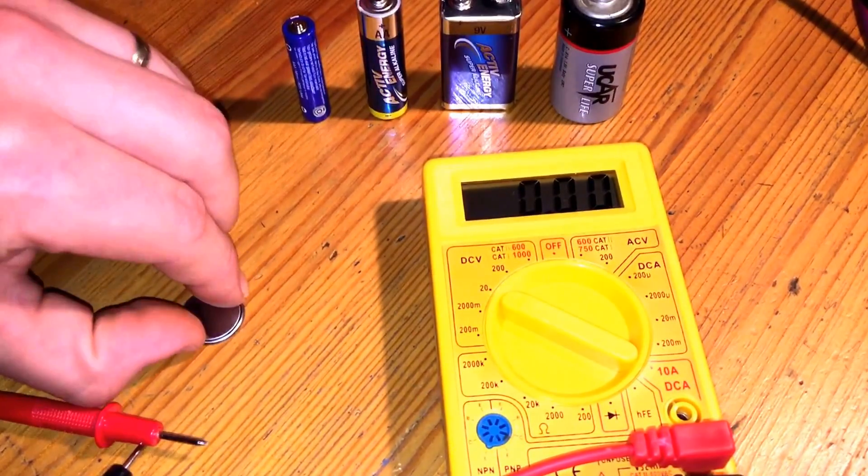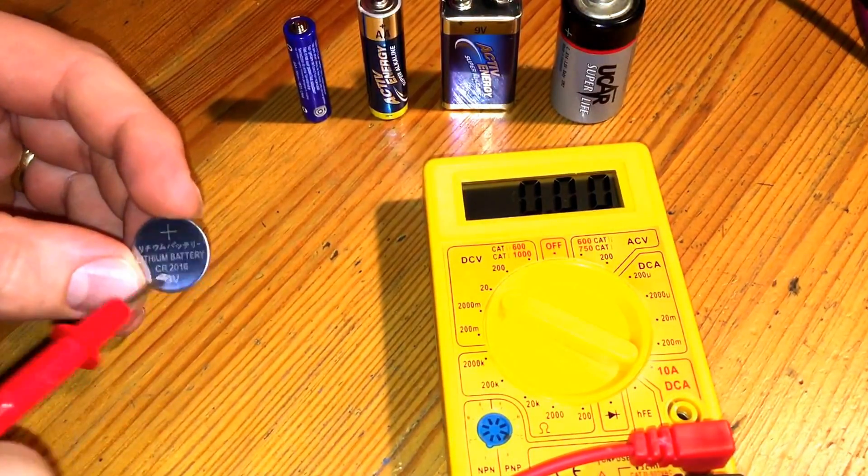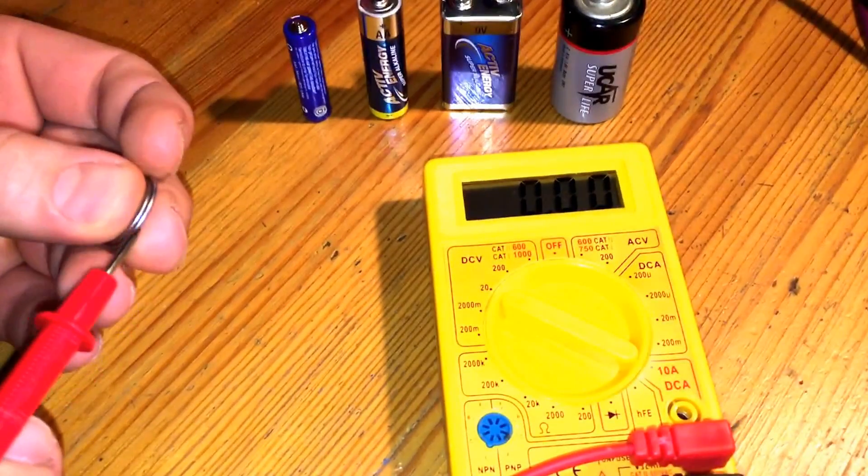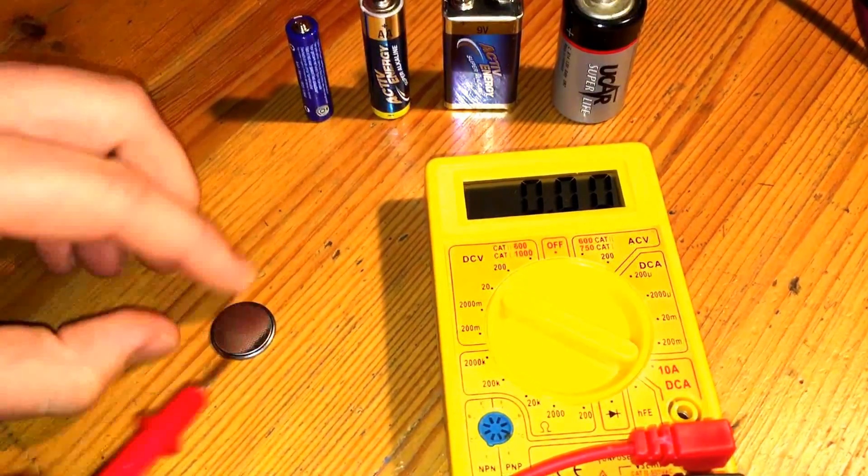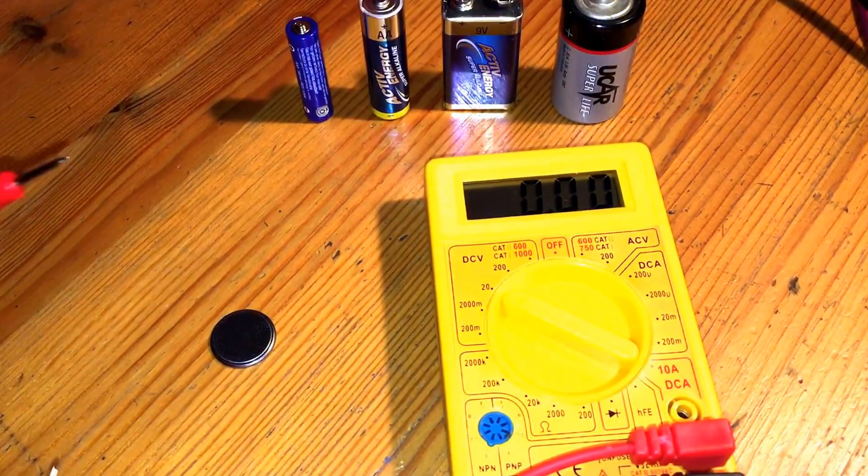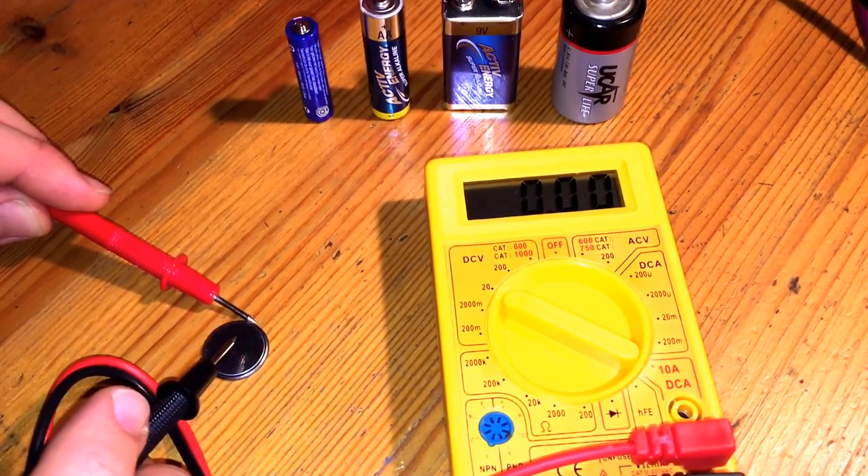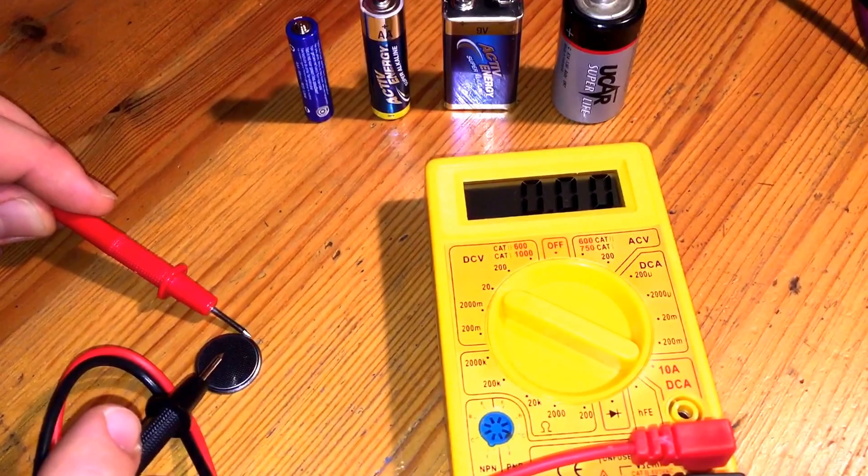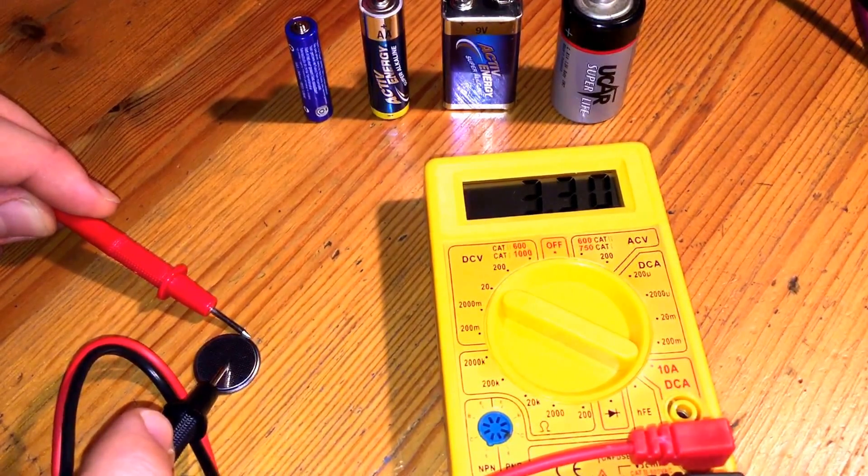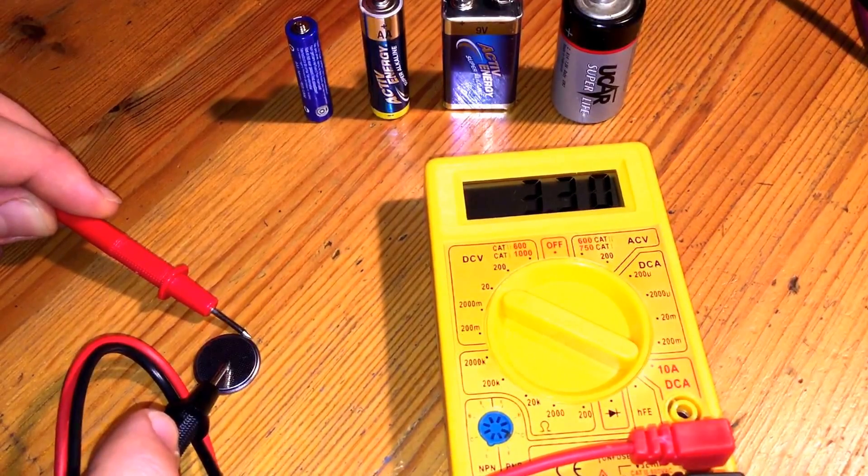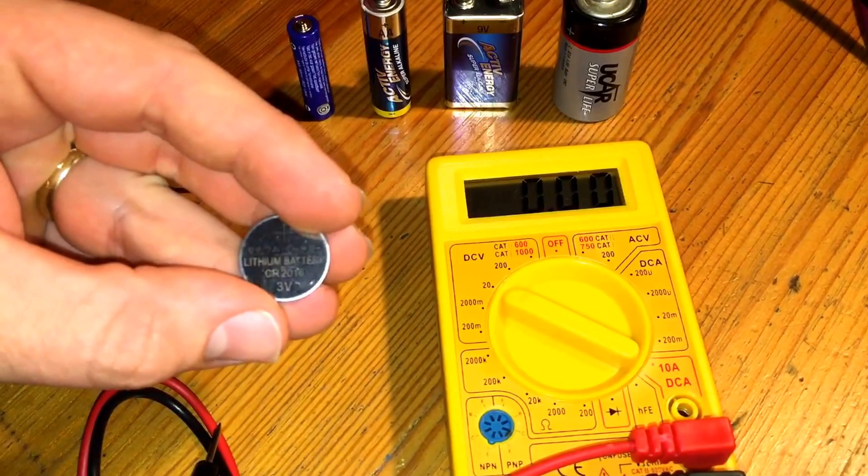Now let's check the coin battery. Let's have a look. This area, all this area, and the little edge is the plus area. And this is the minus area. We took the wire plus on the side and the black one for minus on top. And we can see 3.3 voltage. That means this battery is full.